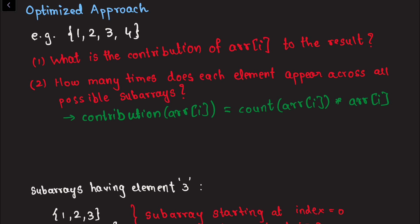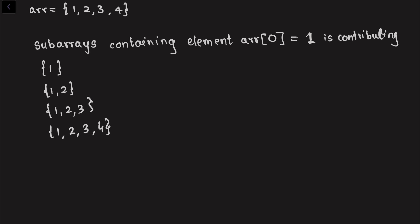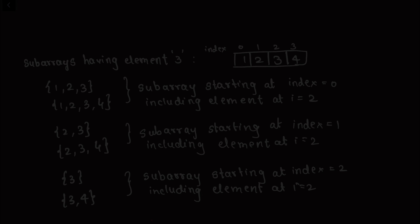Let's look at the optimized approach. Instead of generating all subarrays, can we figure out the contribution of each element array[i] to the final resultant sum? We need to calculate how many times each element array[i] appears across all possible subarrays. Then the contribution of array[i] to the sum is: (number of times it appears across all subarrays) multiplied by the value of that element.